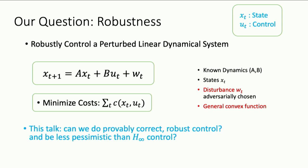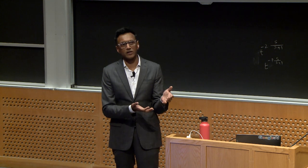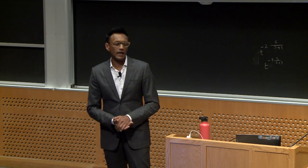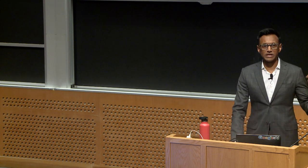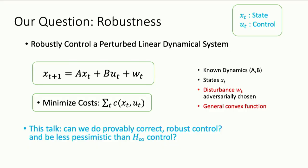We want to do this in a manner that we don't throw out the baby with the bathwater — we want a robust control algorithm that is still practically effective. There's a sense in which, at least in some settings, notions like H-infinity control might be very, very pessimistic. So before I define the notion of robustness we'll consider, let's start by reviewing the classical notion of H-infinity control.